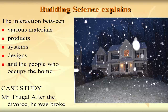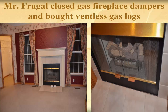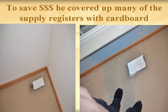Here's an example of building science — we'll call this Mr. Frugal. This client had been divorced twice, was broke, and trying to save money. He bought a few ventless gas logs and put them in his two fireplaces, sealing up the chimneys to capture all the heat. Then he covered up all the supply ducts in the bedrooms he wasn't using, set his furnace really low, and sealed those rooms because he was in the home alone and trying to sell it. If you look at the picture on the far right, you'll notice some staining.